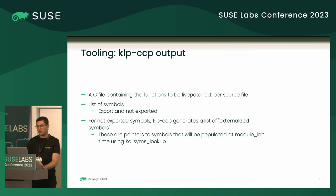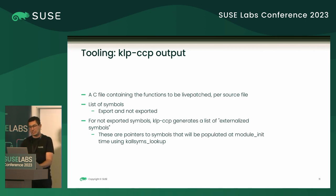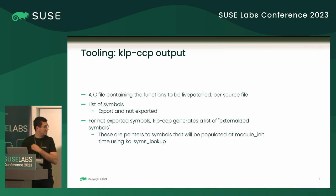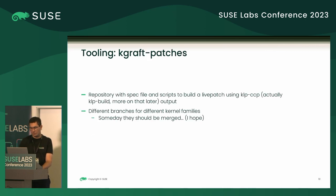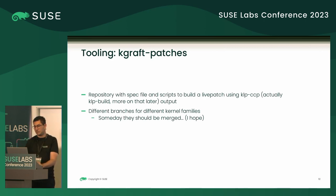For non-exported symbols, koopccp generates externalized symbols — pointers to symbols that will be populated at module init phase using klo_syms_lookup. Because these symbols are not exported, we need to use them either way, so we ask the kernel to provide their addresses so we can call them to make the code behave like before, while including only the fix for that specific problem.